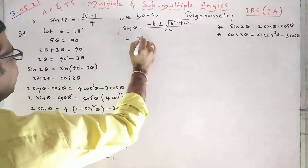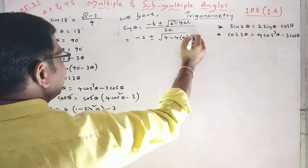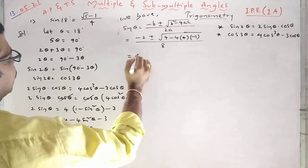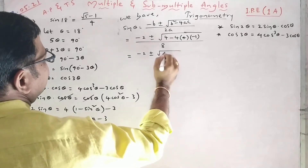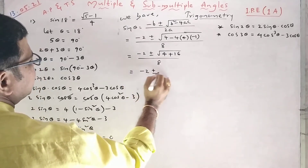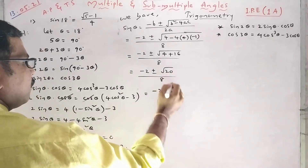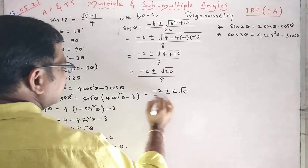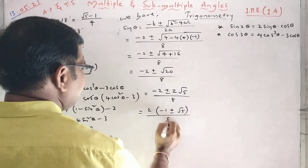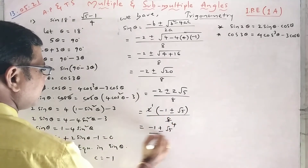Substituting: sin theta equals (−2 ± √(4 − 4 × 4 × (−1))) / 8. That is (−2 ± √(4 + 16)) / 8, which is (−2 ± √20) / 8. Since √20 = 2√5, this gives (−2 ± 2√5) / 8. Taking 2 common: (−1 ± √5) / 4.